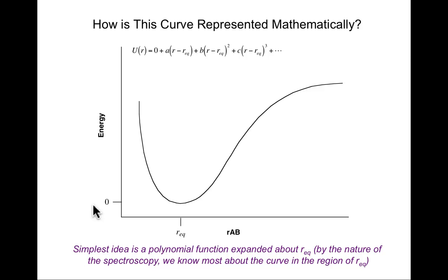If we assign the zero of energy as being at the bottom of this well, we have that the energy U as a function of the distance R is equal to zero, plus some coefficient times the linear term, this is a term that's quadratic in the displacement, this is a term that's cubic in the displacement. It's a polynomial function - I can take this out arbitrarily far, as many terms as I'd like to include.